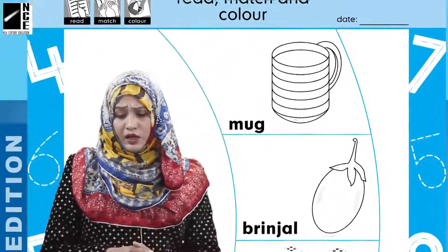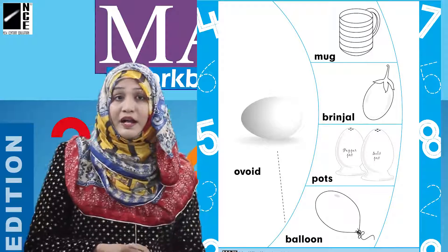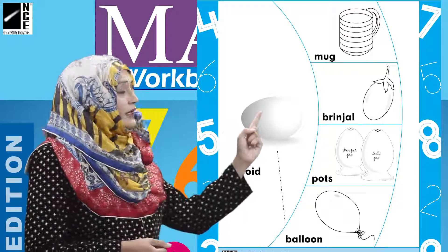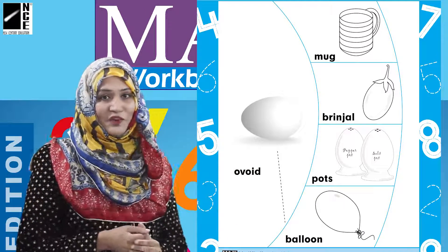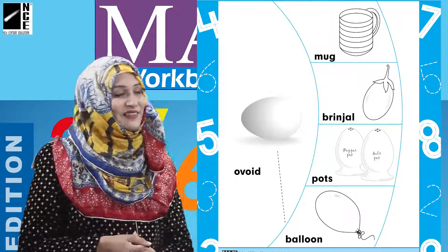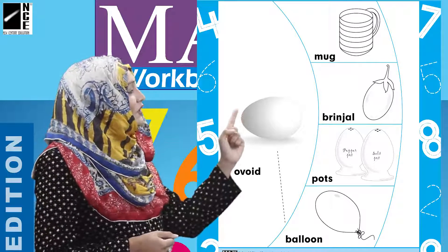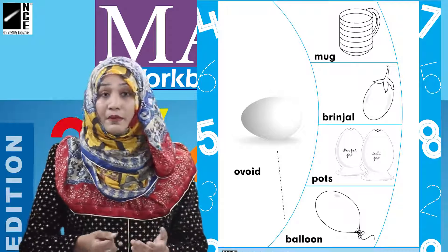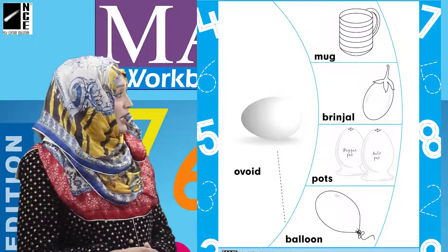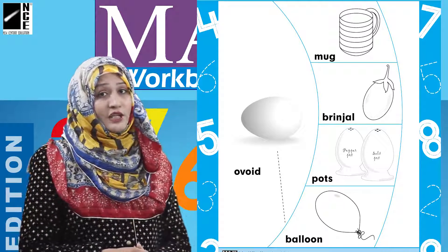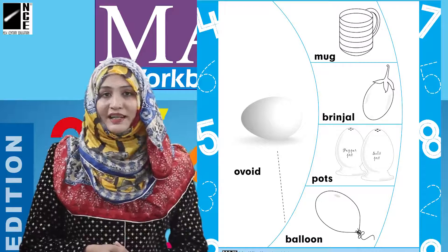Kids, now you can see — dear children — here we have a white shape. Now we have a matching activity. You can see that the balloon shape is one of the shapes that matches this white shape. We have a balloon with a white shape — match the shape and you have to do it with this page.